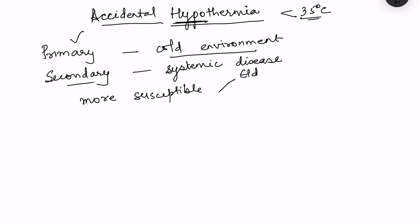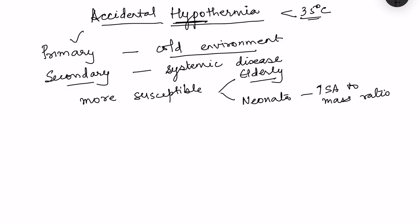First, there are elderly people, especially immobile people, because when immobility is present the metabolic activity is less, and if they are suffering from systemic illness it becomes more predisposing. Then there are neonates — in neonates there is an increased surface area to mass ratio, making them more predisposed to heat loss. Plus, neonates lack effective shivering; they have brown adipose tissue which is protective, but the shivering mechanism is not well developed.